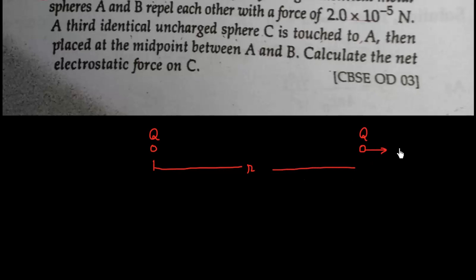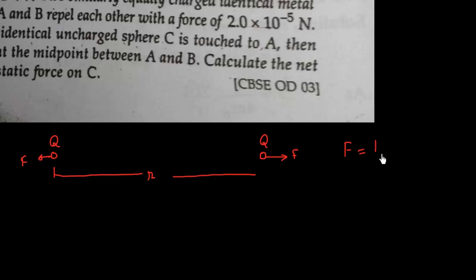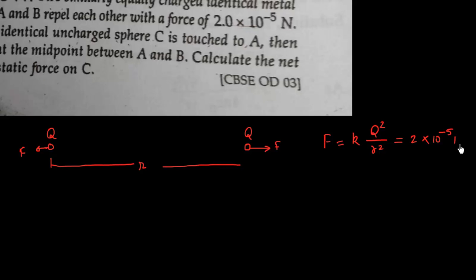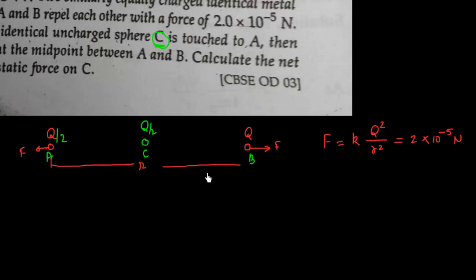The force between them is F = kq²/r², and its value is given as 2×10⁻⁵ Newton. Now there's another identical sphere C, which is touched to A and then kept between A and B. After touching, the charge on C will be q/2 and the charge on A will also be q/2.